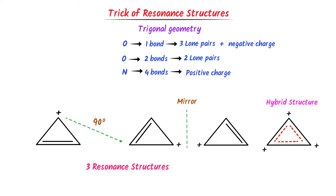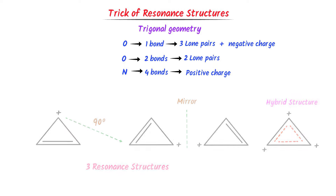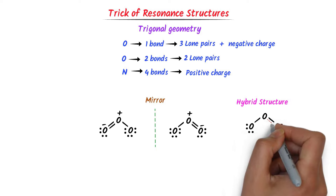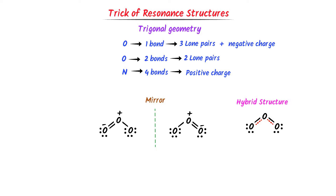Remember that there are some exceptional cases like O3. Here, we do not rotate it — rather we just reflect it. After reflection, we get this second structure. For its hybrid structure, we can easily draw it as shown. Thus, using this trick, we can easily draw resonance structures of molecules having trigonal geometry.